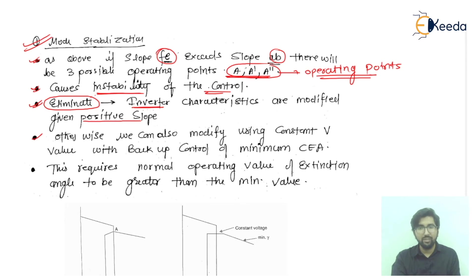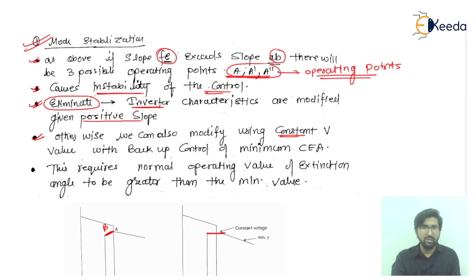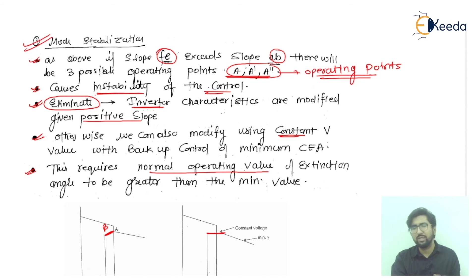We can also modify using constant voltage control. So we have both types of curves — constant beta control and constant voltage control. This requires the normal operating value of the extinction angle gamma to be greater than its minimum value. That is the basic condition.